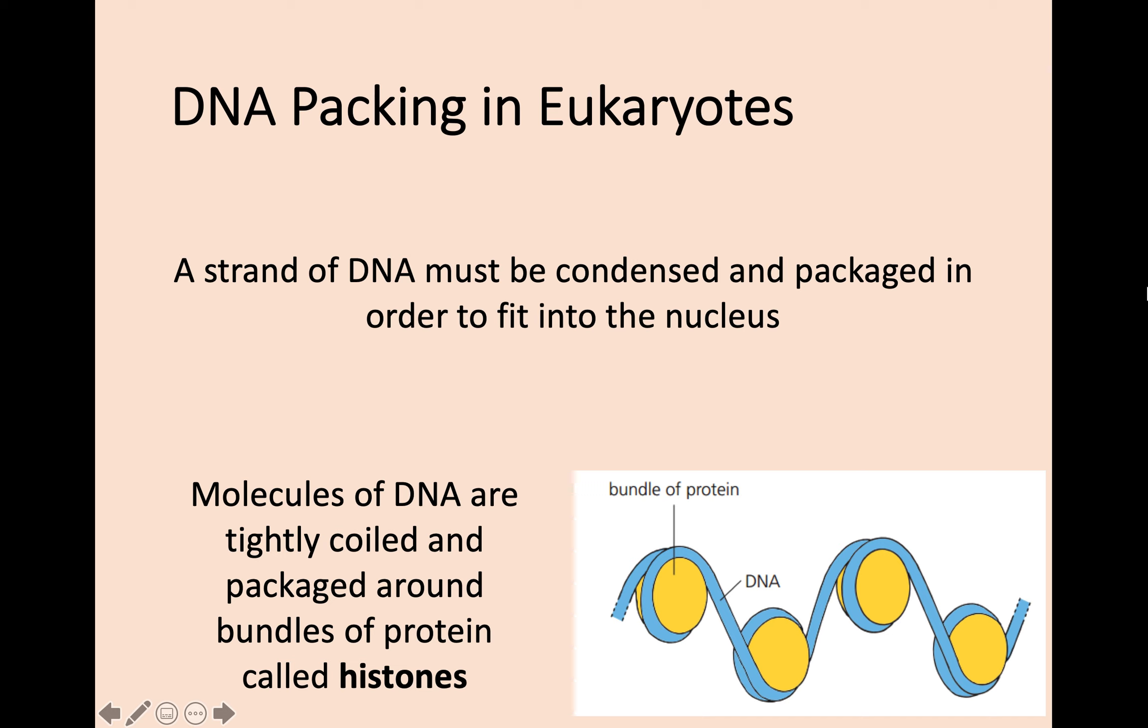One of the final things to look at in this organization of DNA is linear DNA—linear chromosomes. Basically, if you had a line of DNA and stretched it all out, it would go on for miles. Obviously a cell, and especially a nucleus, is so small you need to be able to condense and package all of this DNA to fit into the nucleus. How you do it is shown in this diagram here. Molecules of DNA are very tightly coiled and packaged around these bundles of protein called histones. These areas here that look like beads on a string are called histones, and you can be asked that quite a bit.